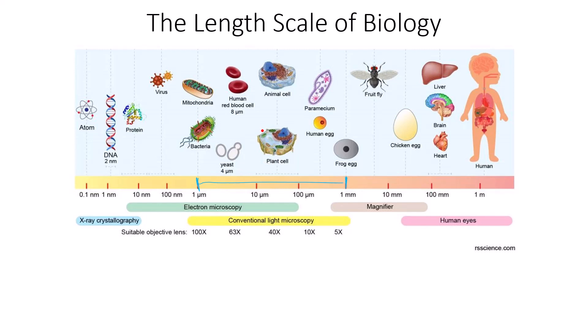Within that light microscope range you see a variety of bacteria (prokaryotes), plant and animal cells (eukaryotes), red blood cells, and individual protists like paramecium and euglena. To go beyond one micrometer you must utilize electron microscopy techniques, which span into the nanometer range. For sub-nanometer range you need X-ray crystallography, getting down to the level of atoms.